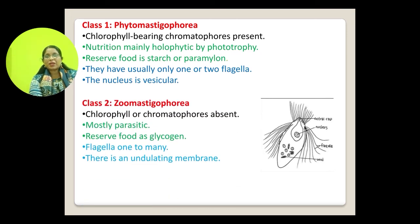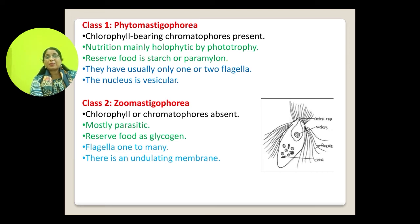Class Zoomastigophora: chlorophyll or chromatophores are absent, these are mostly parasitic, reserve food is glycogen, and flagella may be many.